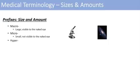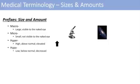Some other things about amount and size: hyper just means high, above normal, or elevated. The opposite of hyper is hypo, which means low, below normal, or decreased.